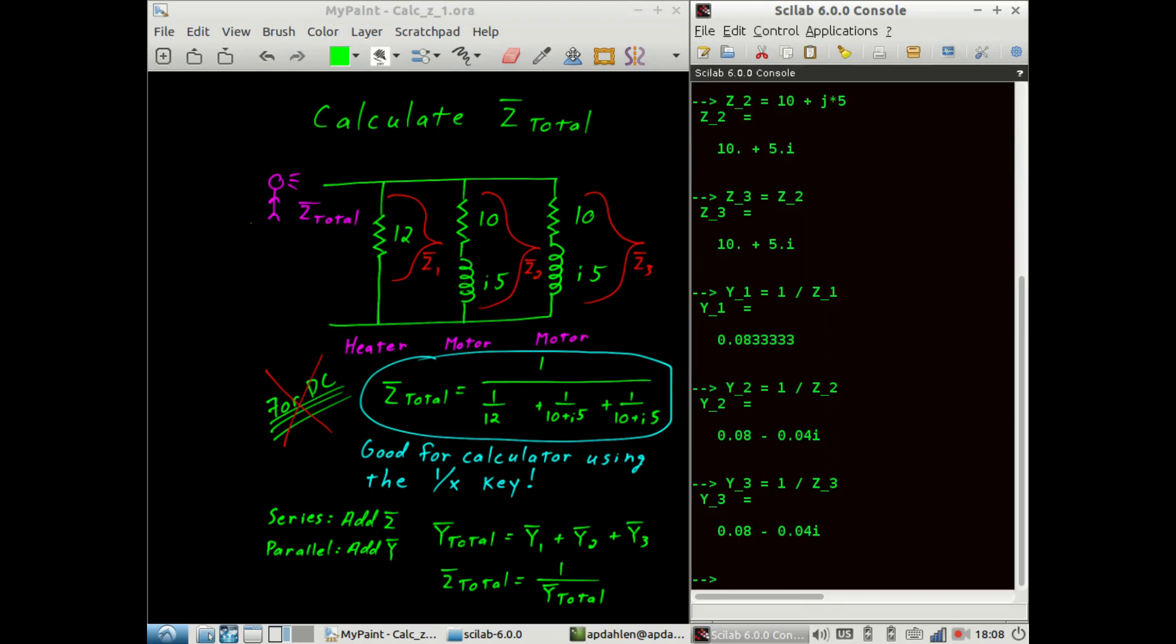The total admittance is equal to the sum of admittance 1 plus admittance 2 plus admittance 3. And now we can calculate the total impedance as 1 over the total admittance. In rectangular form, that gives us 3.7 plus J 1.2 ohms. You could calculate the absolute value of this. That gives you about 3.9 ohms.